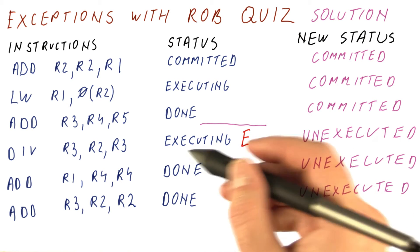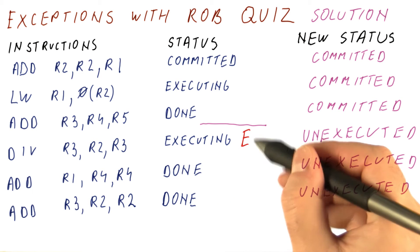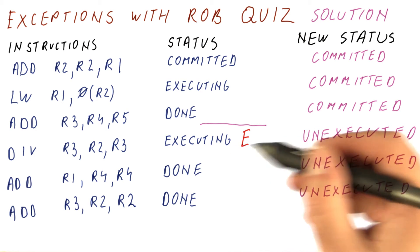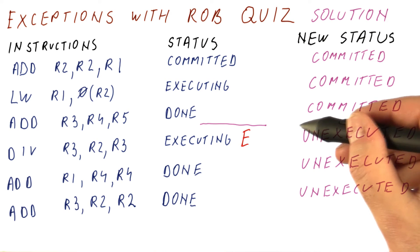Now we reach the point where the divide carries this exception condition into the commit with it. So when we try to commit the divide, we realize we cannot do that. And that's the point at which we stop committing.